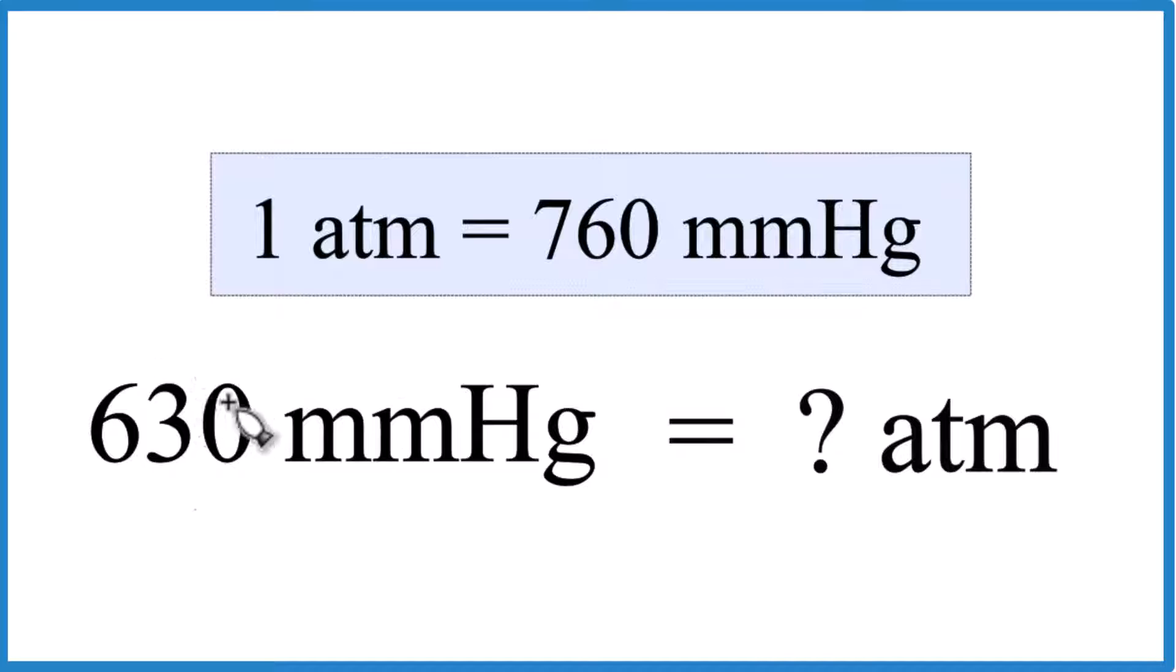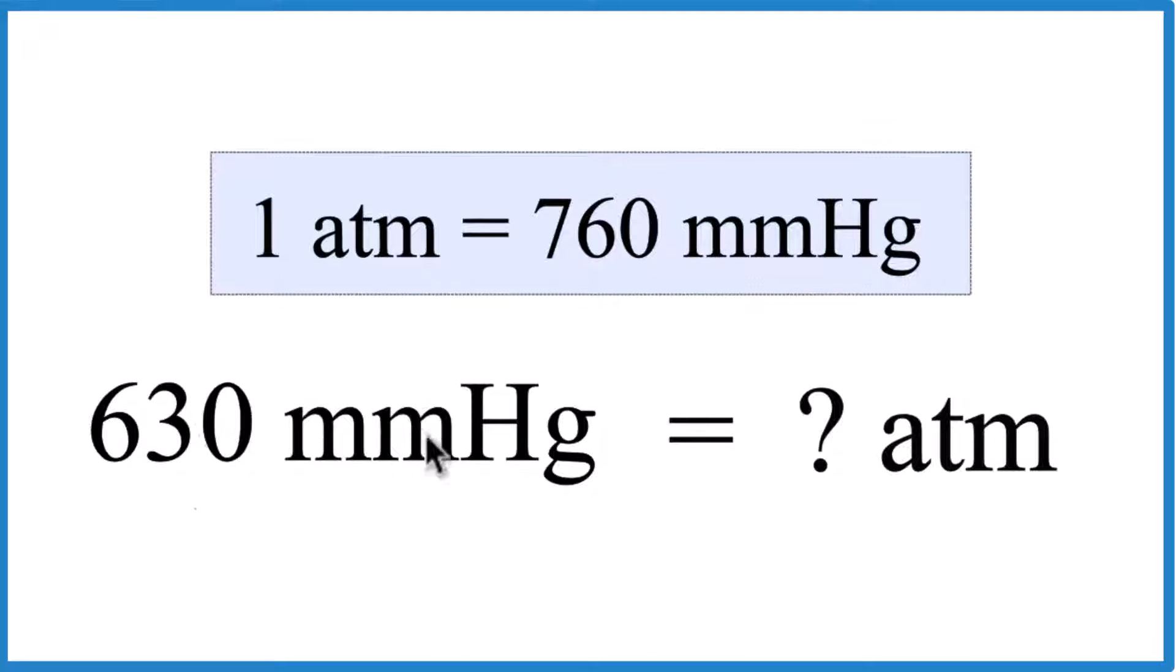What we'll do is we're going to take our 630 millimeters of mercury, multiply it by the conversion factor.